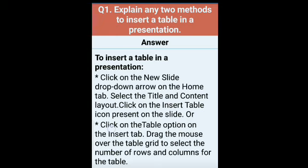Second method: click on the table option on the insert tab. Insert tab के अंदर जाएंगे और वहाँ पे table पे क्लिक करेंगे. Then drag the mouse over the table grid to select the number of rows and columns. जितने भी rows and columns चाहिए, उतना mouse को table grids पे drag करेंगे और table आ जाएगी. So these are the two ways using which we can insert a table in PowerPoint.